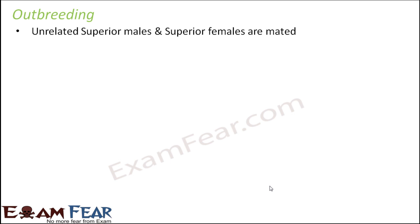That is where the concept of outbreeding came from. In outbreeding, unrelated superior males and females are mated. The term 'unrelated' is very broad — it could mean the two animals belong to the same breed but share no common ancestor, belong to two different breeds altogether, or even belong to two different species. Depending on how the animals are unrelated, there are three types of outbreeding.